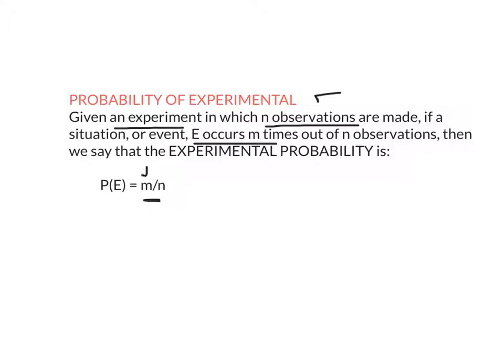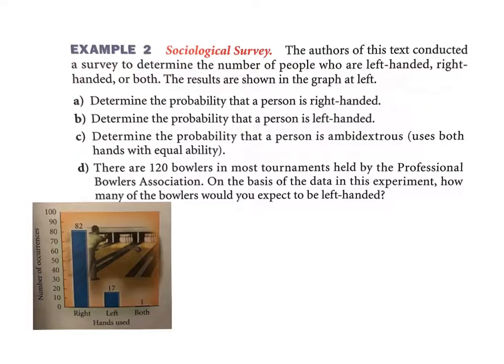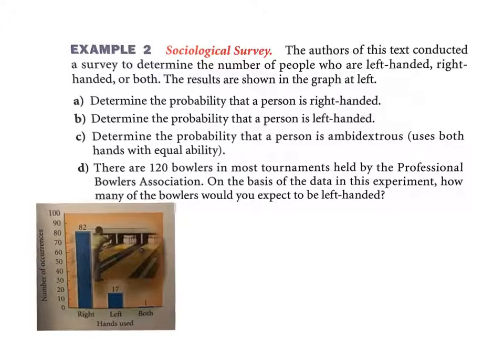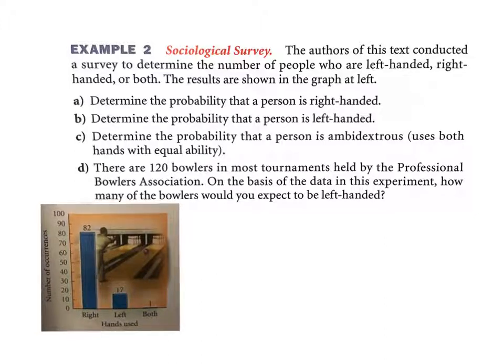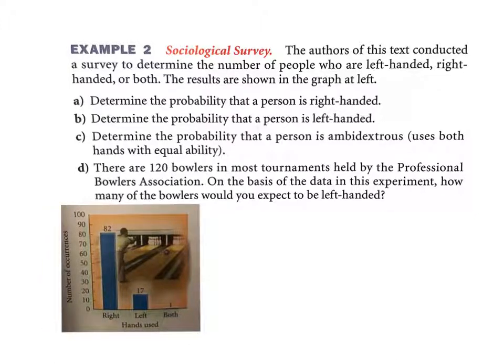Let's try some. The authors of this test conducted a survey to determine the number of people who are left-handed, right-handed, or both. Determine the probability a person is right-handed. I'm looking at the picture down here. There you go, it's still small but I think you can see it now. 100 people were in the study and 82 of them are right-handed, so it's part a. There were 82 out of 100, we'd always reduce when we can, so 41 out of 50.